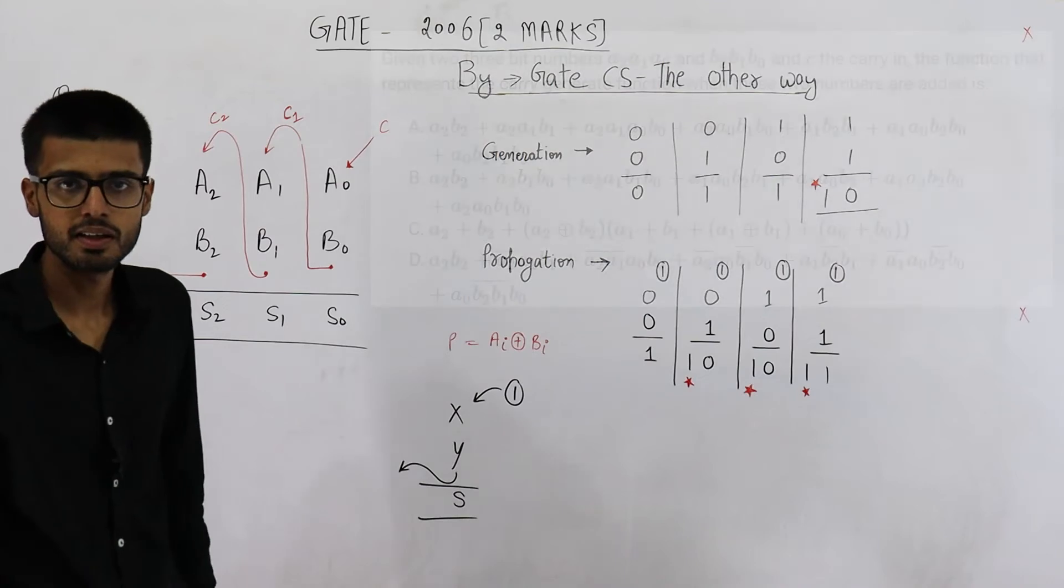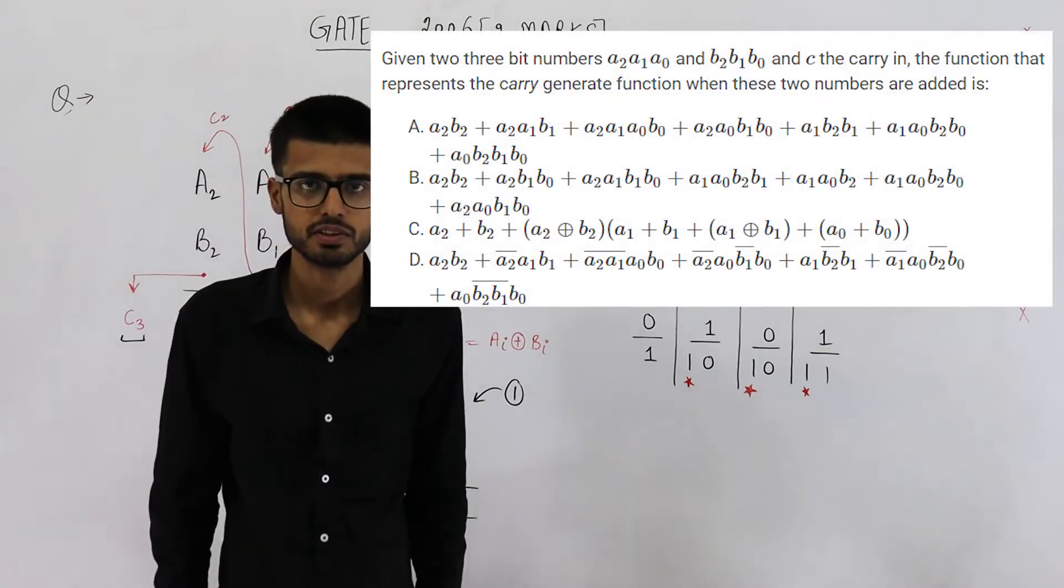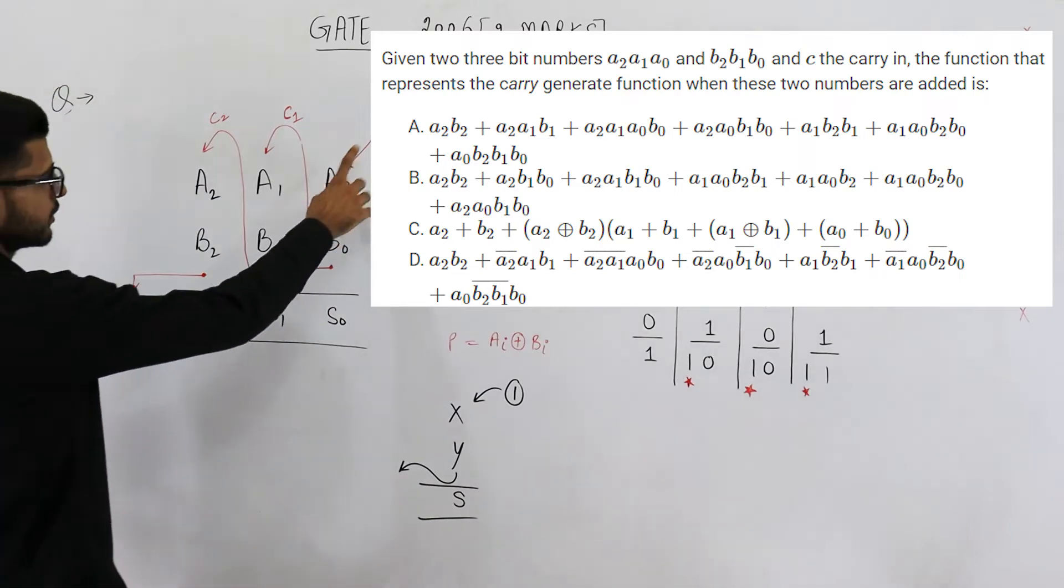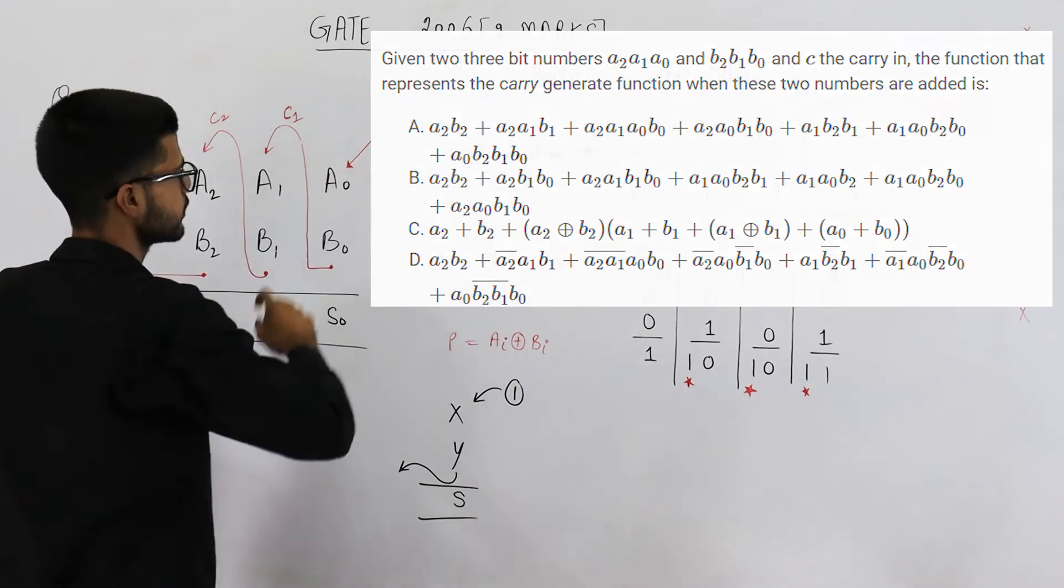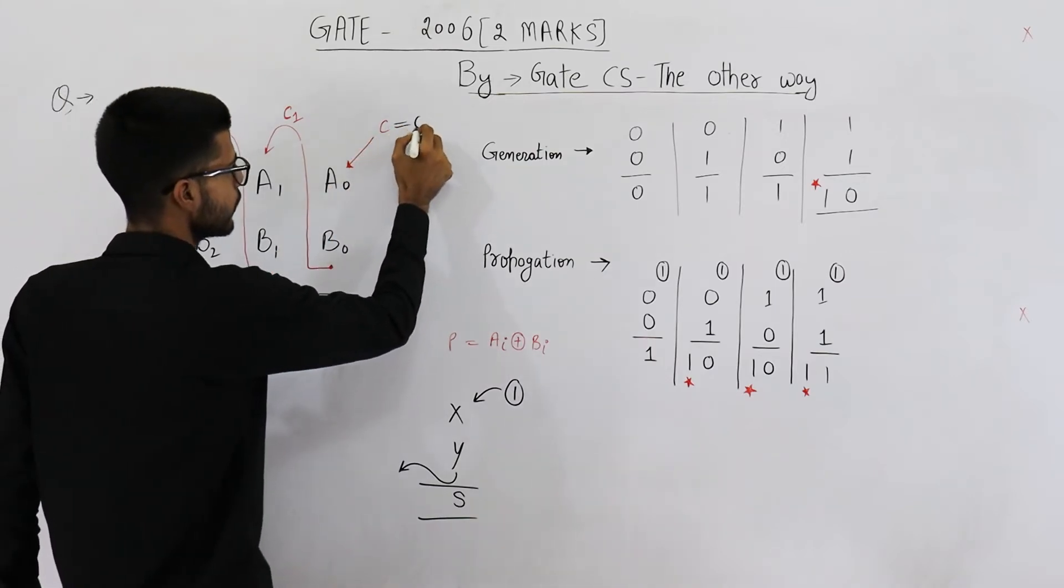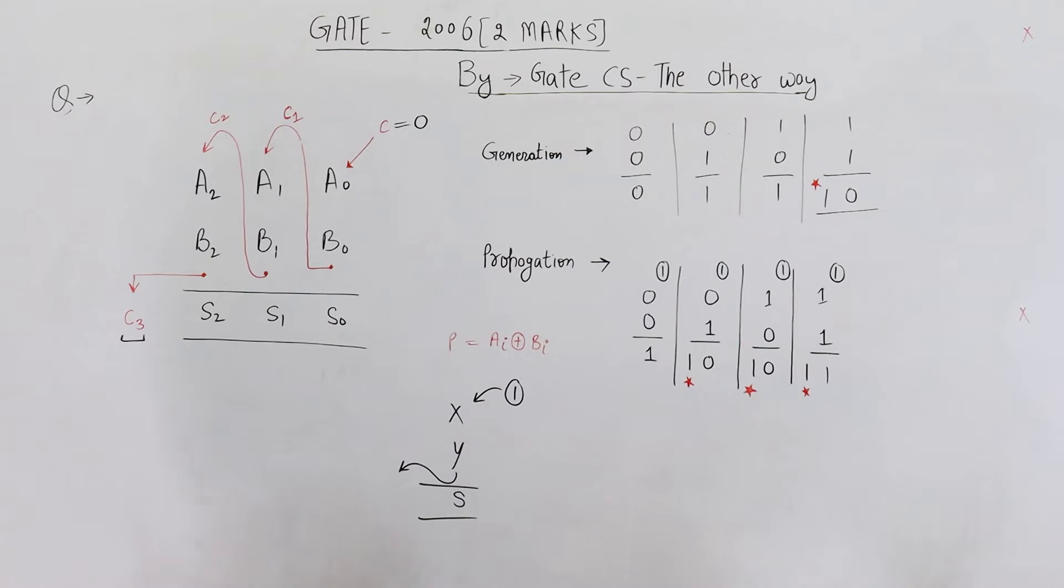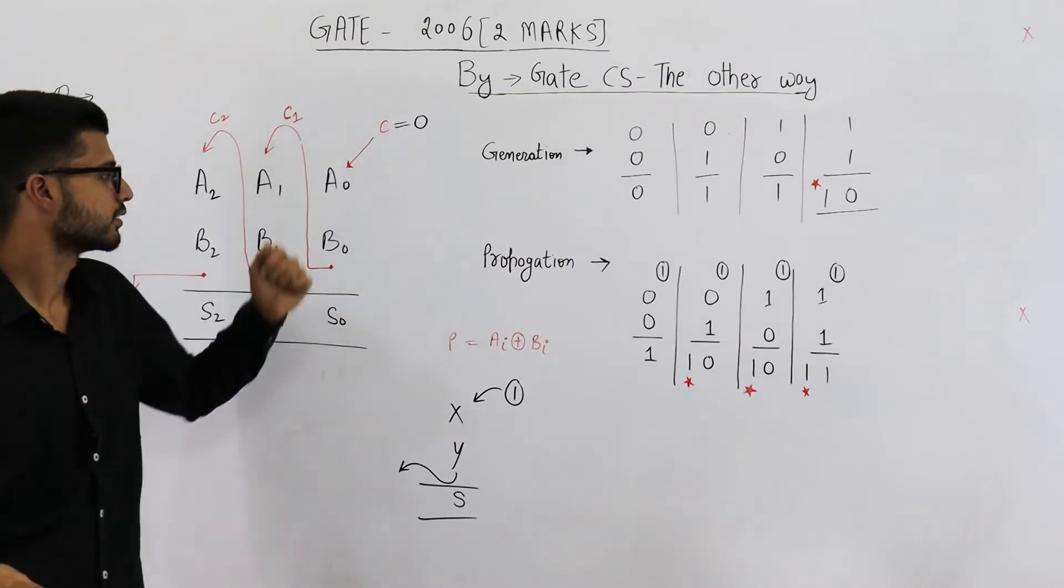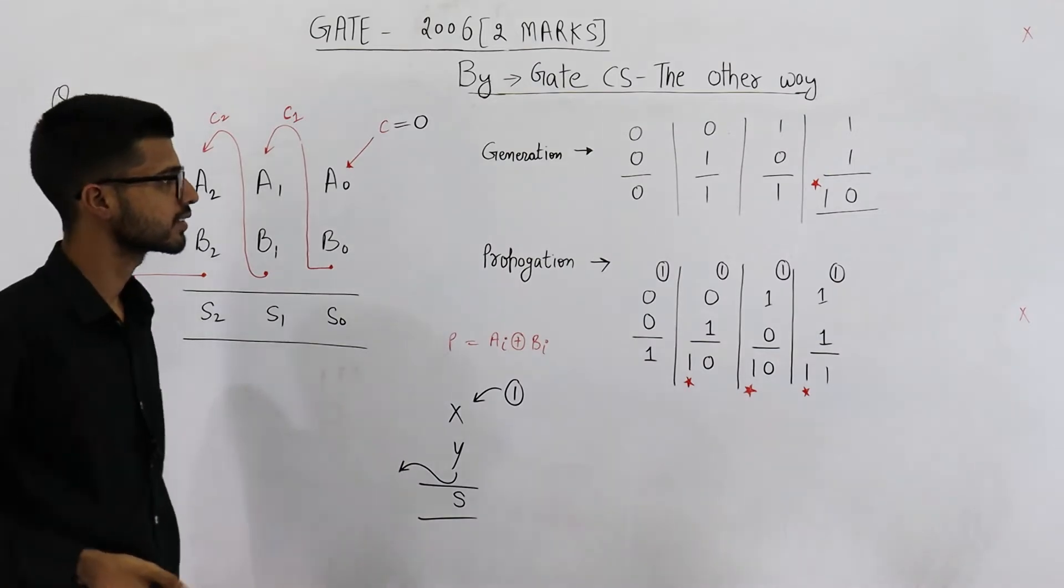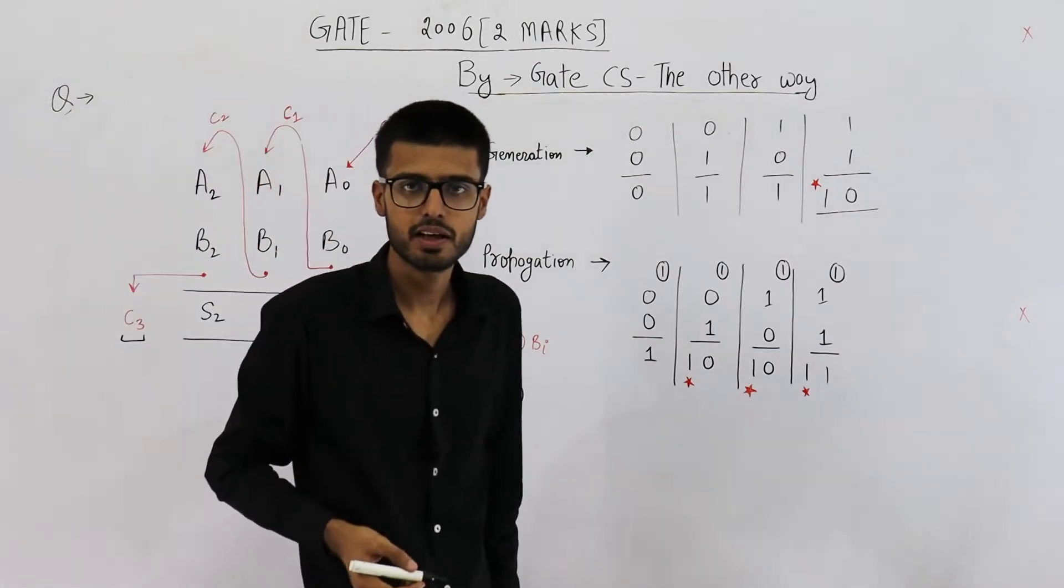There is no way you can eliminate C from the equation of C3. But all of these options don't contain C. Rather none of these options contain C. This is the reason we are assuming that carry in or C to be equal to 0. This carry is 0.